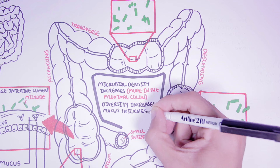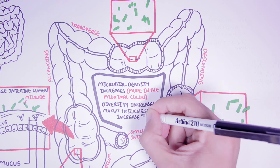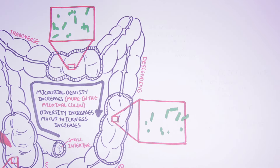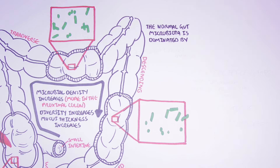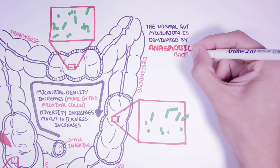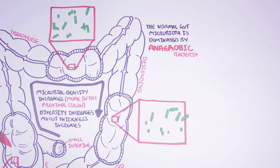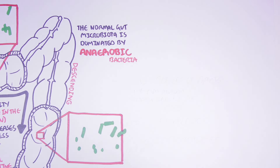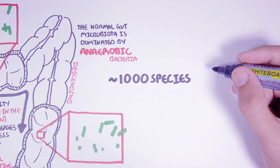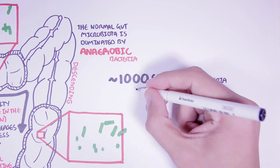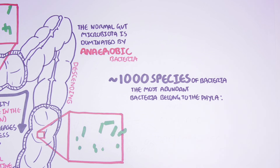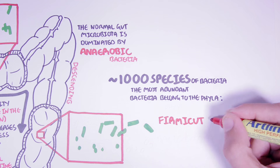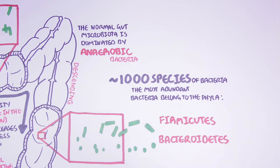With this increase in density, there is also an increase in bacterial diversity — more bacterial species as we move towards the end of the colon. With the increase in bacterial diversity and density, there is also an increase in mucus thickness. The normal gut microbiota is dominated by anaerobic bacteria, but there are some aerobic and facultative anaerobic bacteria found in the intestine. In total, there are up to 1,000 species of bacteria living in our gut, which interestingly only belong to a few known bacterial phyla. The most abundant bacteria come from the phyla Firmicutes and Bacteroidetes.